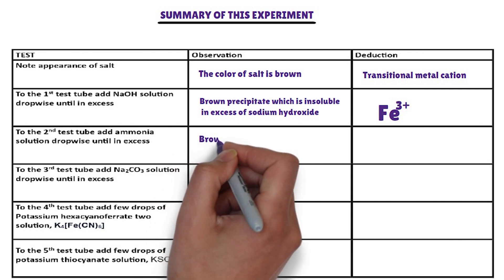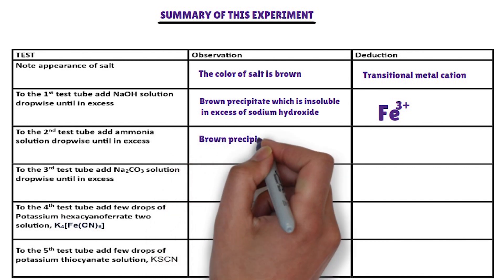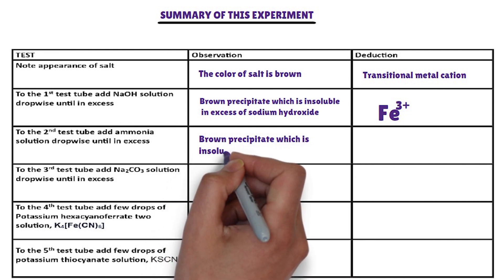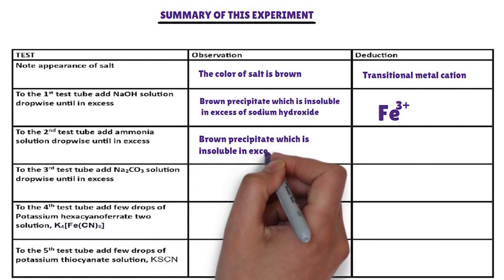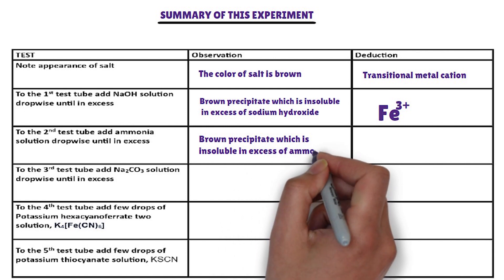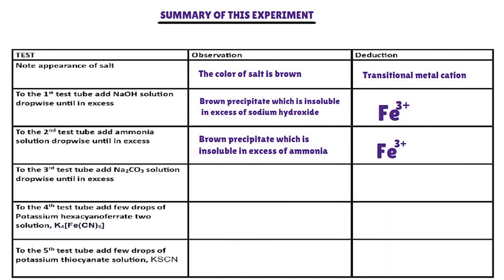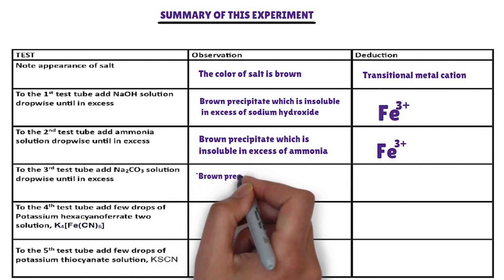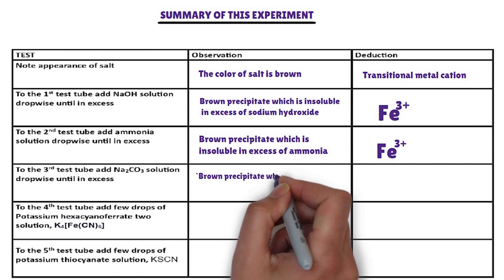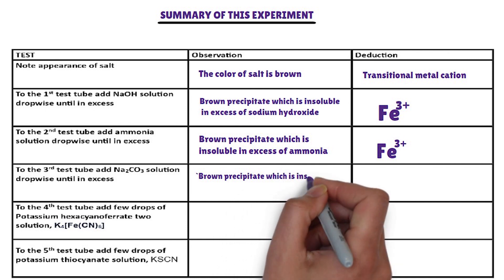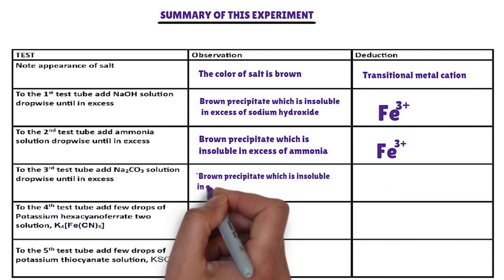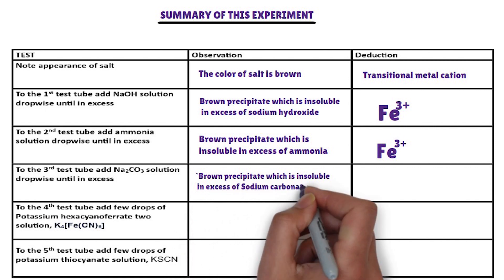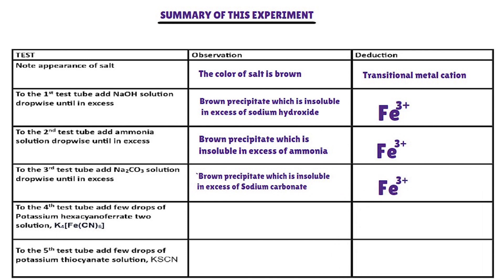In the second test tube, ammonia solution is added dropwise. The cation that forms a brown precipitate with ammonia solution, insoluble in excess, is iron-3-ion. In the third test tube, sodium carbonate solution is added dropwise. The cation that forms a brown precipitate with sodium carbonate solution, insoluble in excess, is iron-3-ion.